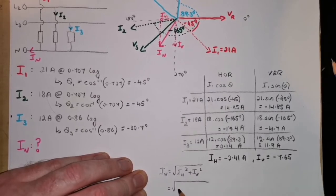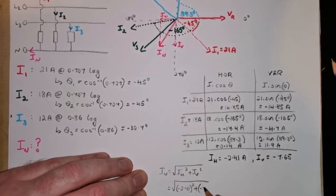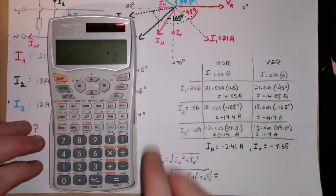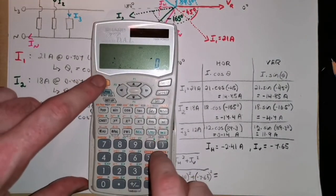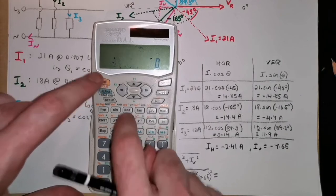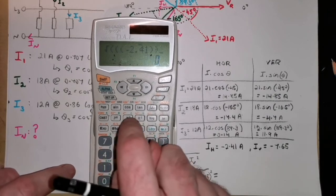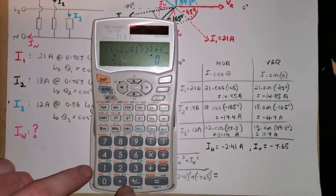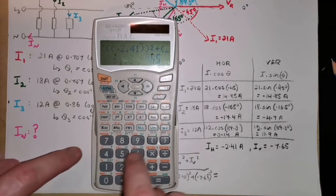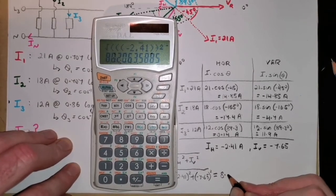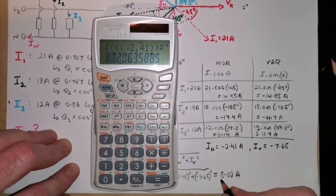Square root of minus 2.41 squared plus minus 7.65 squared. Now, to save space here, I'm going to put this calculation in one go, but you may not want to do that. It's up to you. So, the square root of minus 2.41 squared plus minus 7.65 squared. I'm getting about 8.02 amps, then, as my neutral current.